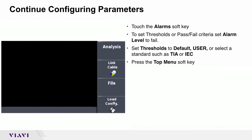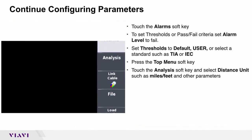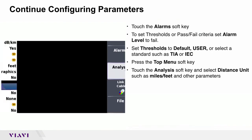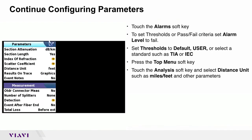Press the TOP MENU soft key. Touch the ANALYSIS soft key and select DISTANCE UNIT such as MILES or FEET, and change any of the other parameters as necessary.